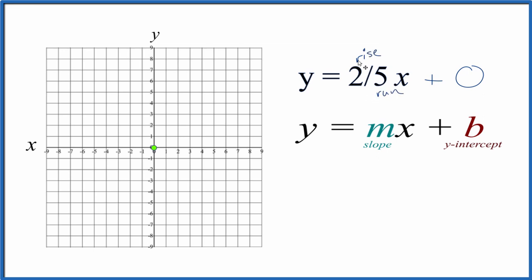So we rise 1, 2, then we run 1, 2, 3, 4, 5. So we go to our y-intercept, we rise 1, 2, and then we go to the right 1, 2, 3, 4, 5. So now we have two points.